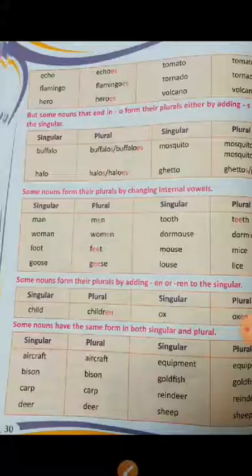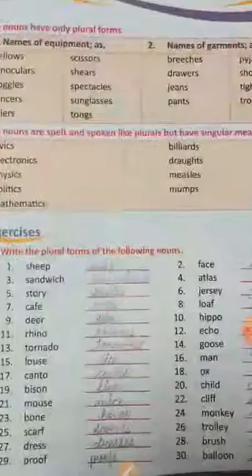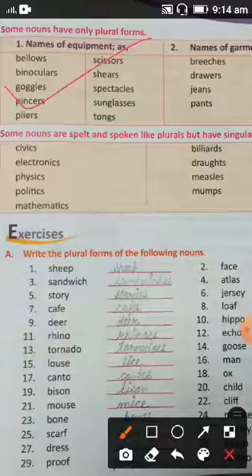Some nouns have the same form in both singular and plural — like aircraft, bison, deer, equipment, goldfish, reindeer, and sheep. These will be the same in singular form as well as in plural form. There are also more examples including names of equipment and garments.